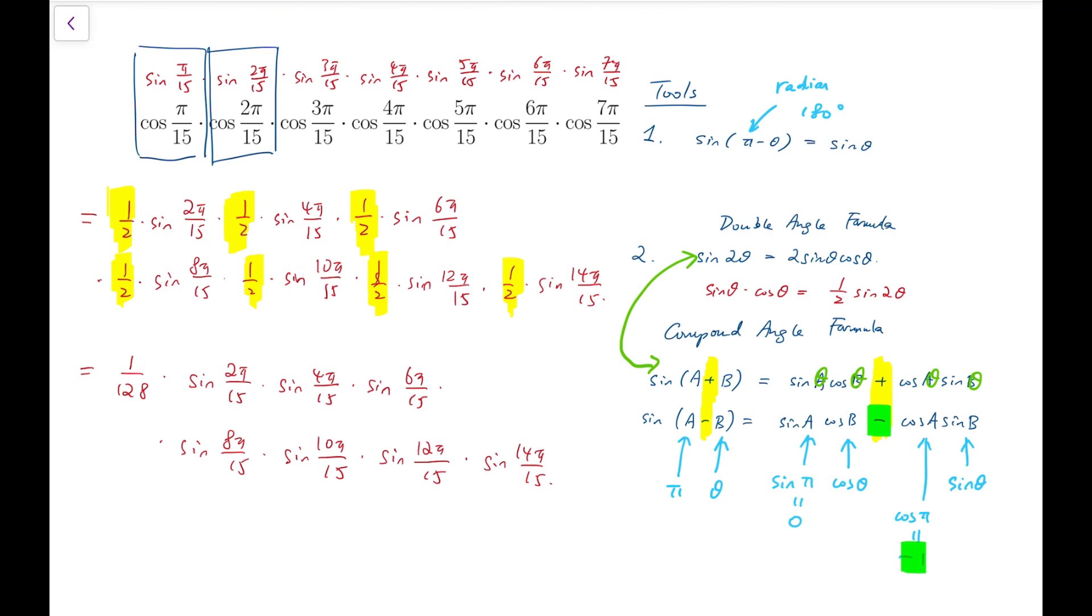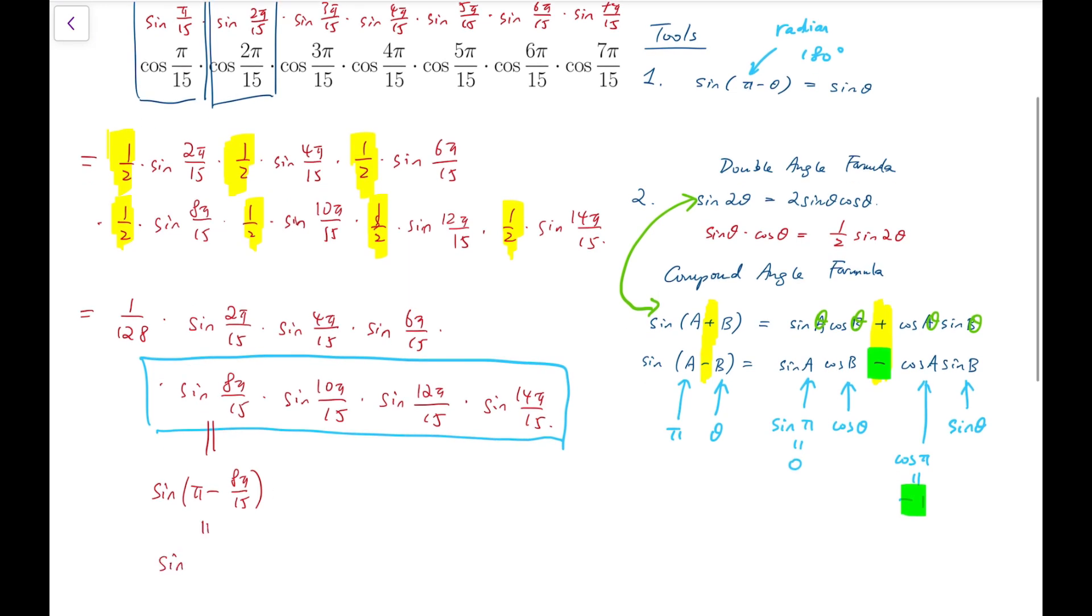Now, the reason that I arrange the terms in this way is that I'm going to do something on the second row, while I'm going to fix the terms on the first row instead. I'm going to bring in the first tool I've introduced, related to 180 degrees, related to pi, which is that I can rewrite sine of 8 pi over 15 into sine of pi minus this angle instead. And that's equal to sine of 7 pi over 15.